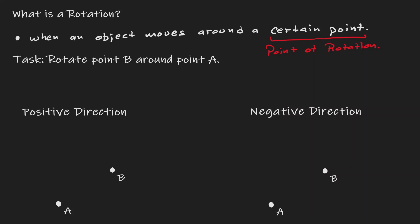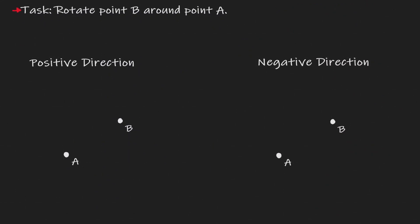Let's visualize this by looking at the following task. What we want to do is rotate a point — let's call it B — and we want to rotate it around A. So B is the object in this illustration, and A is the point of rotation.